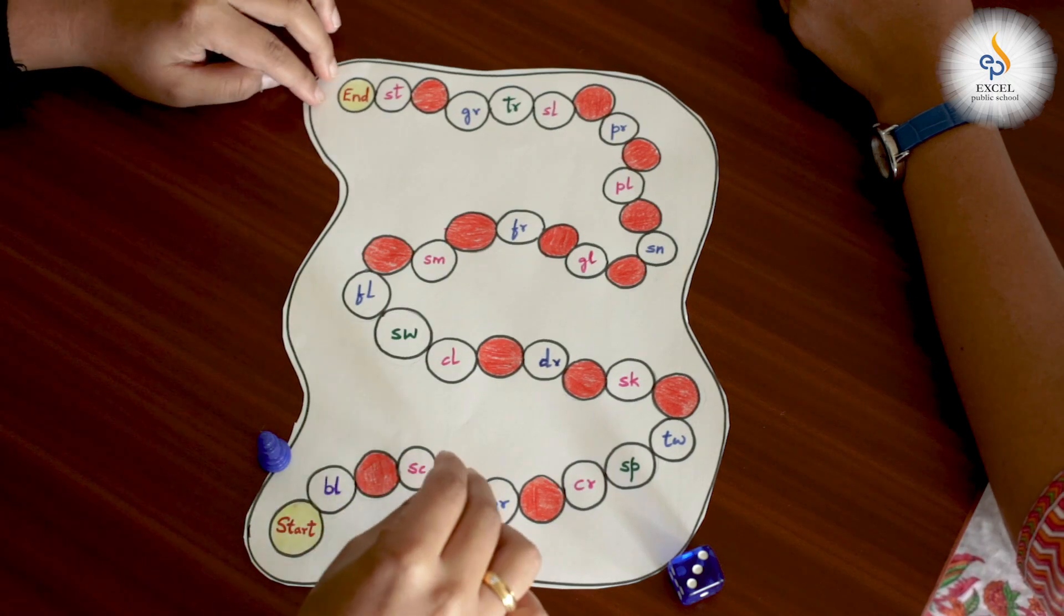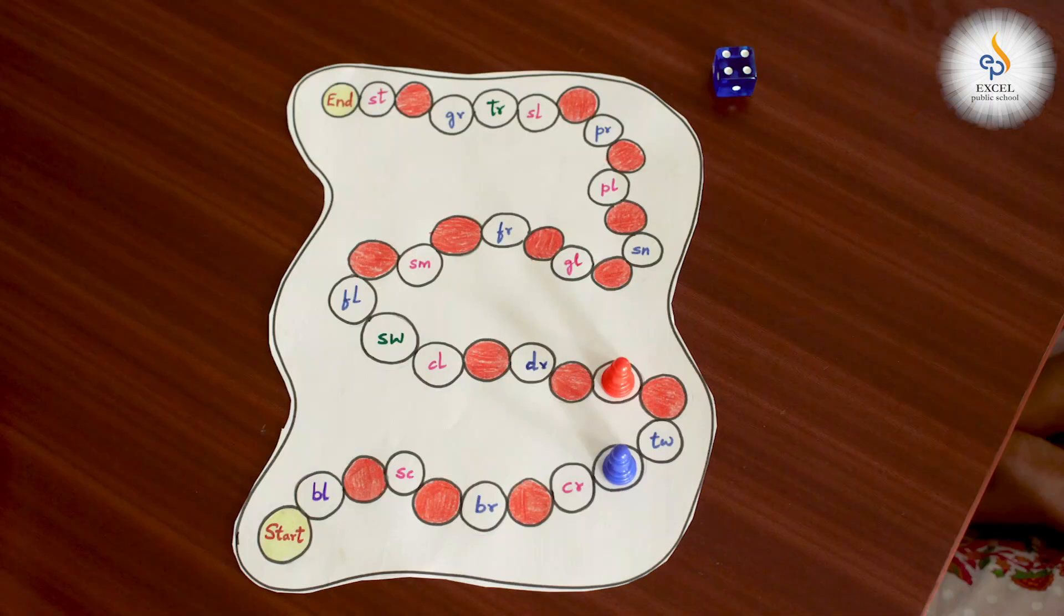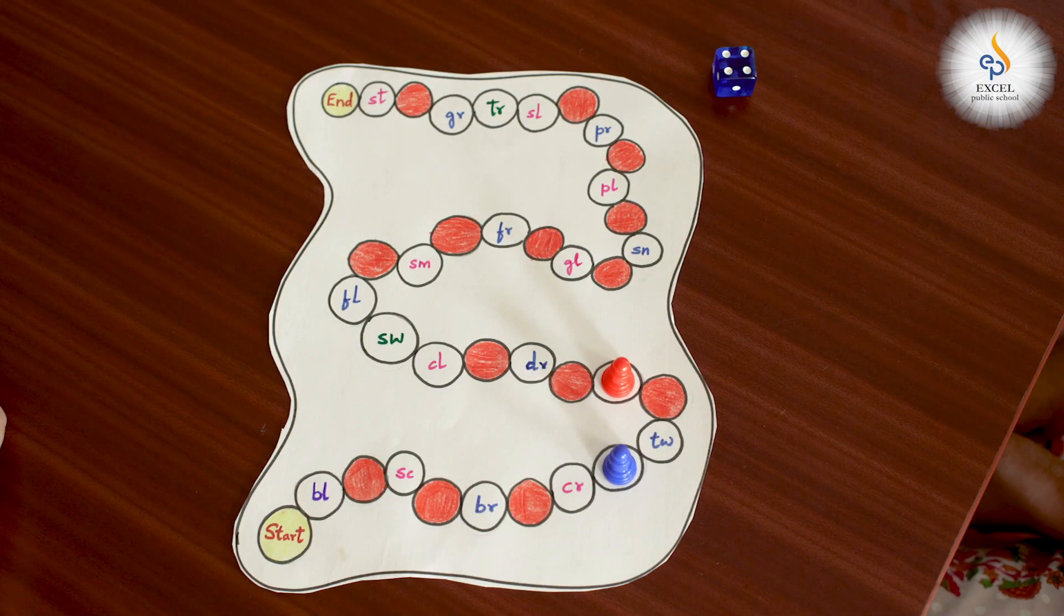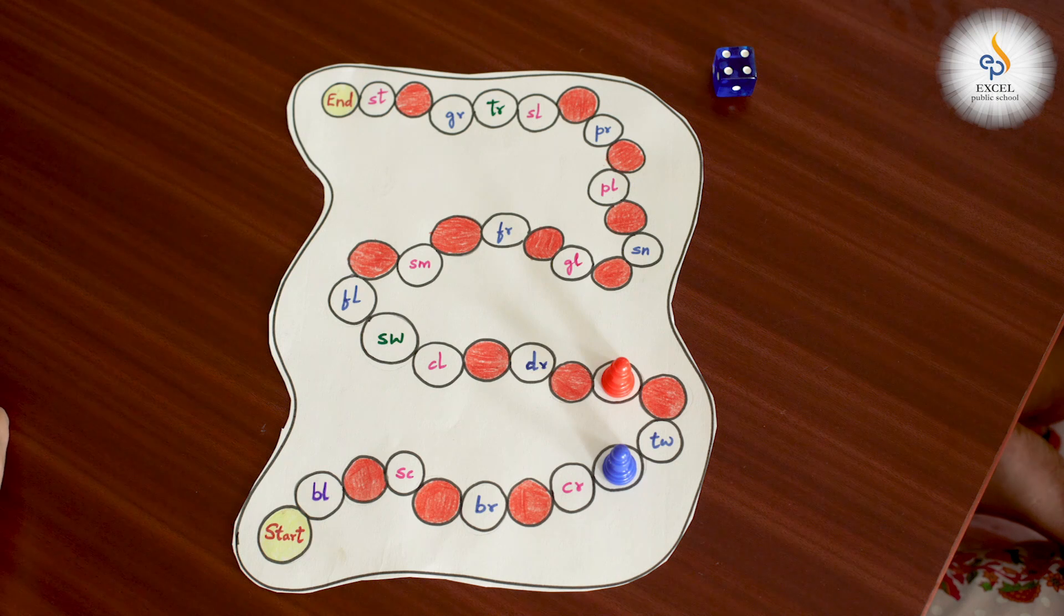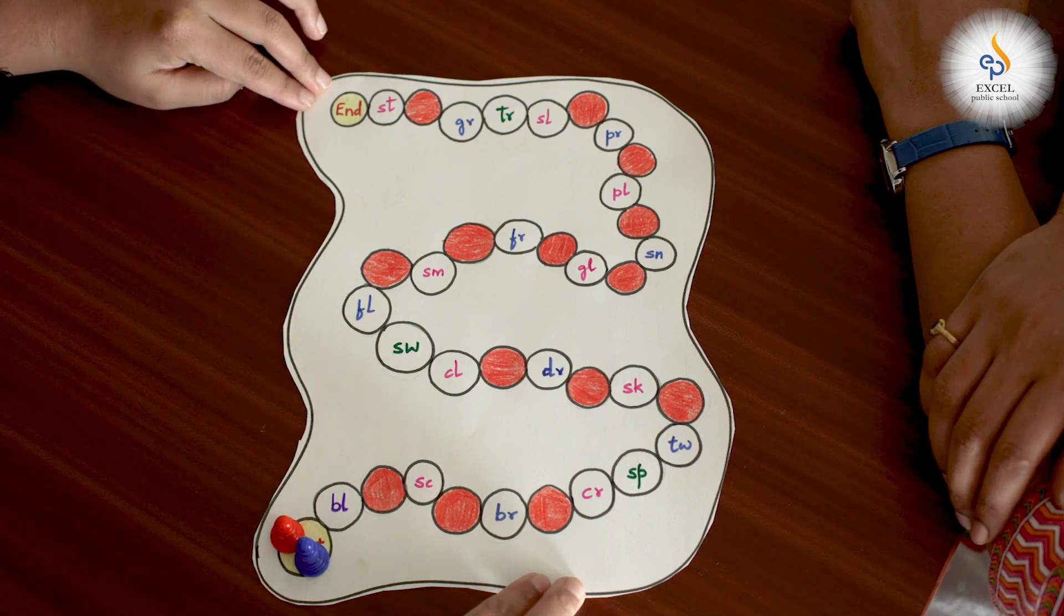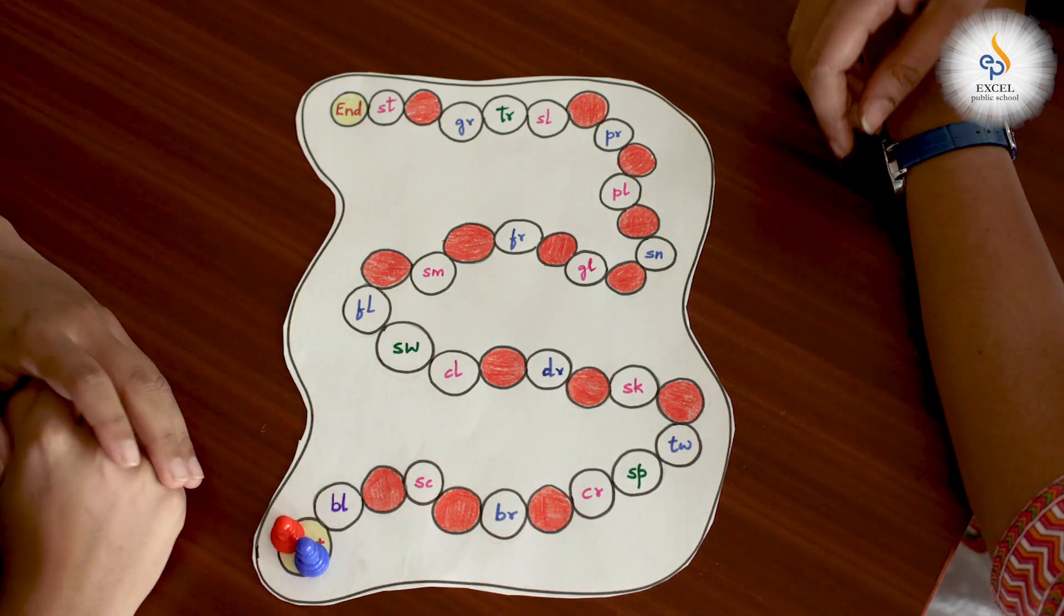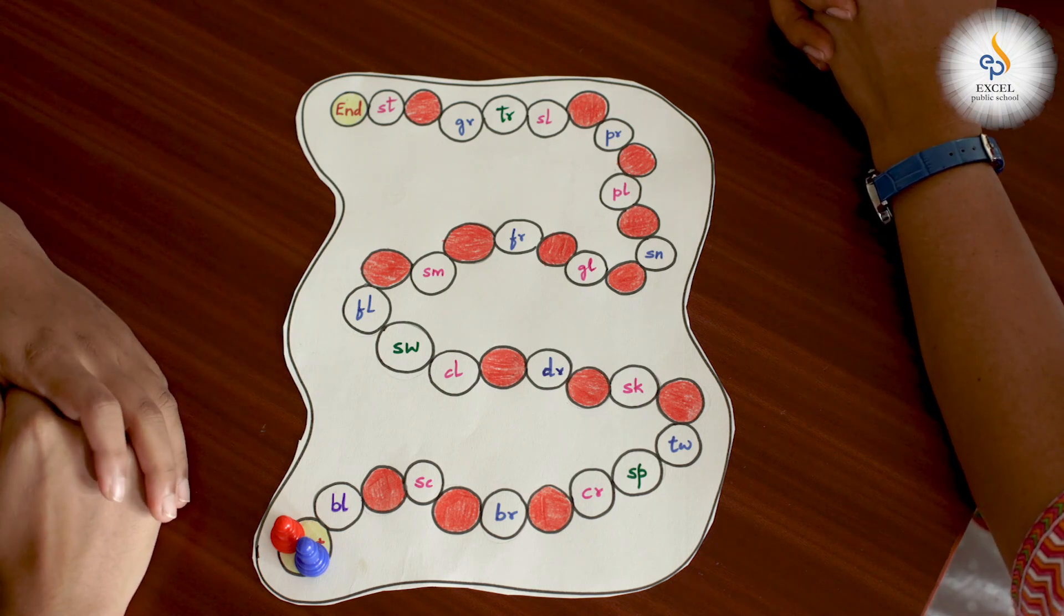In case your pawn lands on a blank, you miss your turn. In case you don't say the blend out loud or say a word from that blend, you miss a turn. Whoever reaches the end first are the winners. If you want to create the board game with the same blends written in it, you can pause and draw the board. Shall we begin?